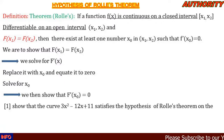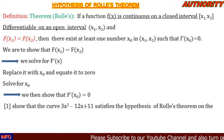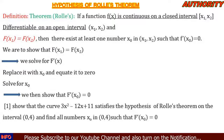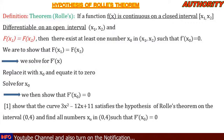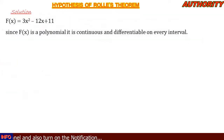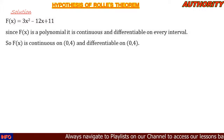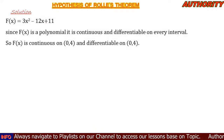Consider this question: show that the curve f(x) = 3x² − 12x + 11 satisfies the hypothesis of Rolle's Theorem on the interval [0, 4], and find all numbers x naught in (0, 4) such that f prime of x naught equals zero. Since this function is a polynomial, it is both continuous and differentiable on every interval, particularly on [0, 4].